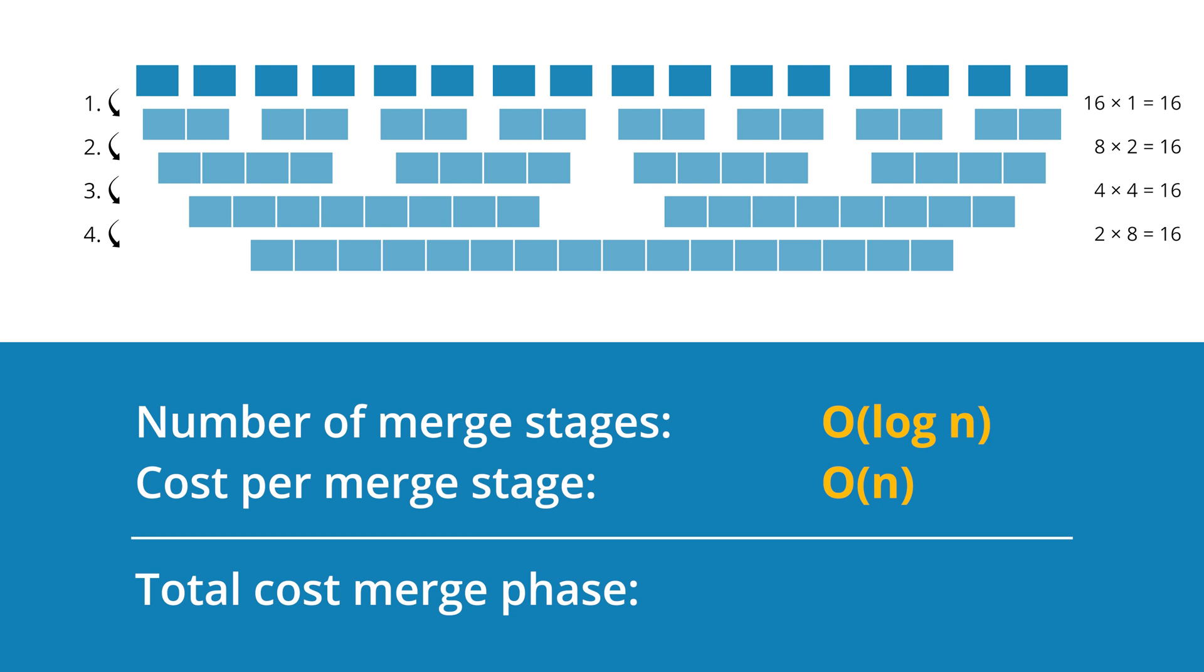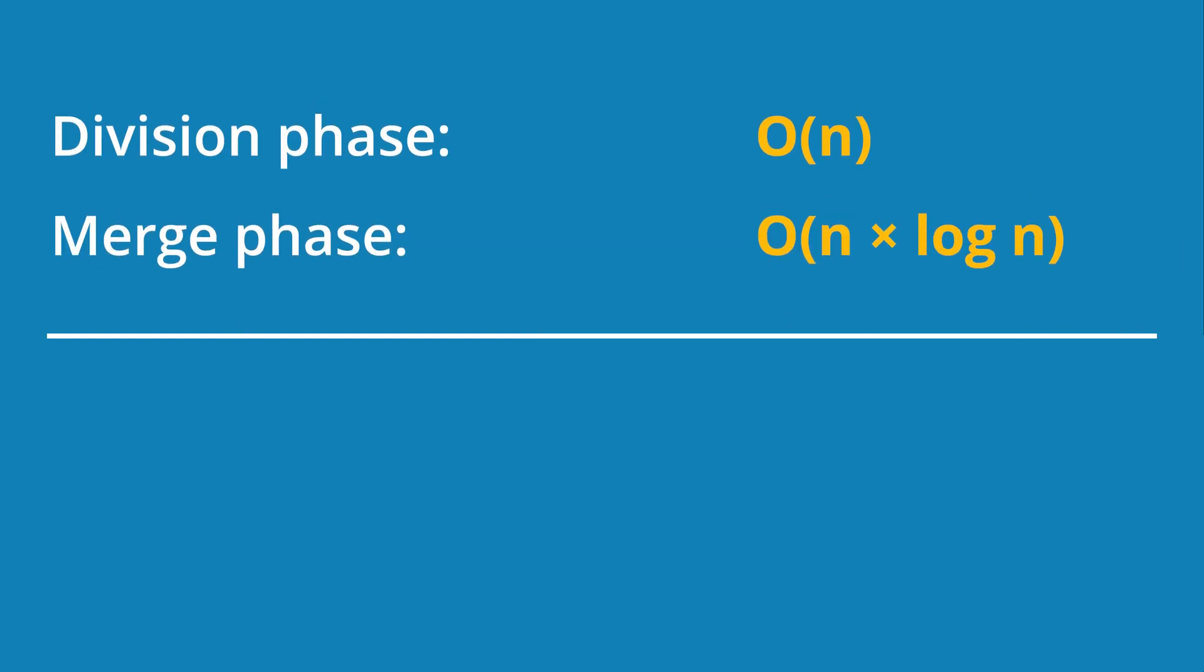We calculate the total cost of the merge phase by multiplying the cost per merged stage by the number of merged stages. And we can combine this to order n times log n. If we now add division and merge phases, we get order n plus order n times log n. We can drop the smaller complexity class order n, and we get an overall time complexity of order n times log n.